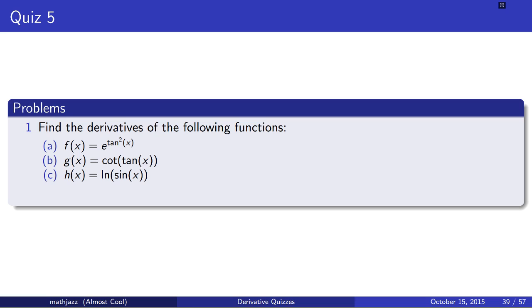h of x equals natural log of sine of x. And problem 2. Find the tangent line for f of x equals x squared plus 1 to the 4th at the point where x equals 2.